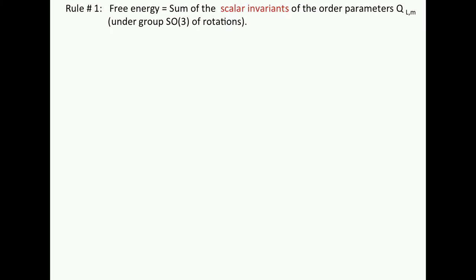Rule number one. You do this with free energy, and you have to write this free energy as a sum of scalar invariants of these Q L M. What does it mean? It's actually very simple. It just means that you need to write down terms which don't change if you rotate your coordinate system. You can take any coordinate system, and it shouldn't depend on how you rotate it. Makes sense, right?